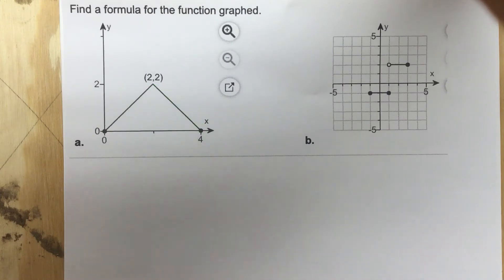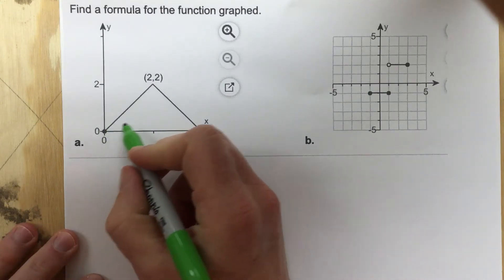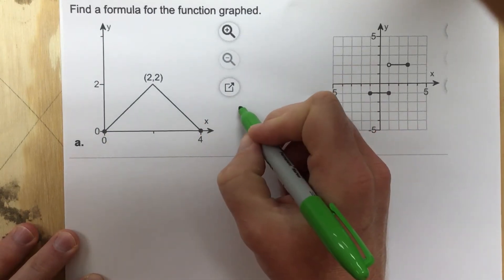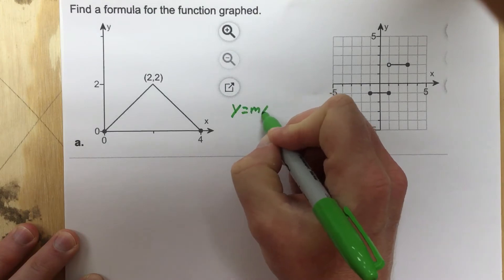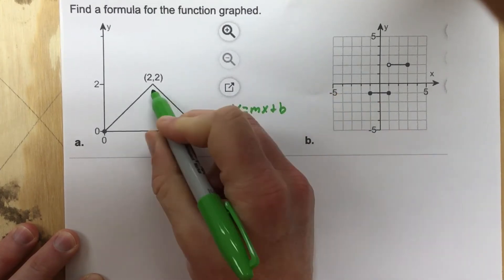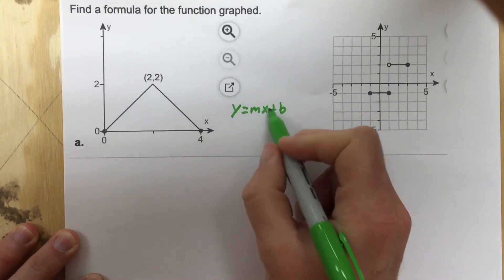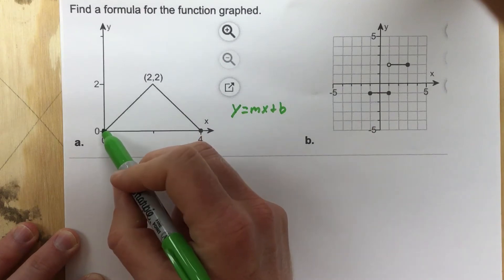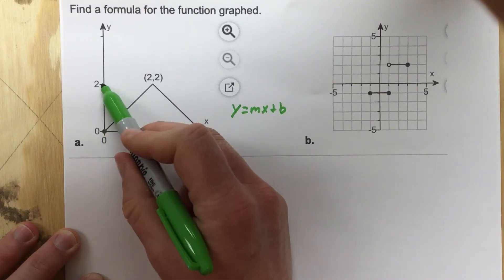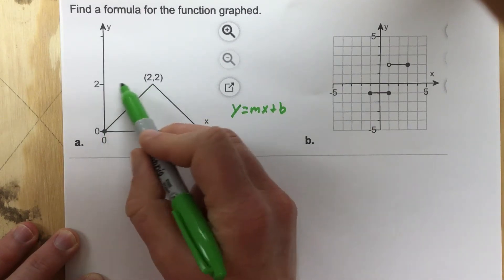Let's go ahead and write this out. We know we're going to use y equals mx plus b because that's linear. We can see that these are both linear, so we're going to use slope-intercept form. I know that my slope here, I go up 2 over 2, so the slope for the first line is 1.